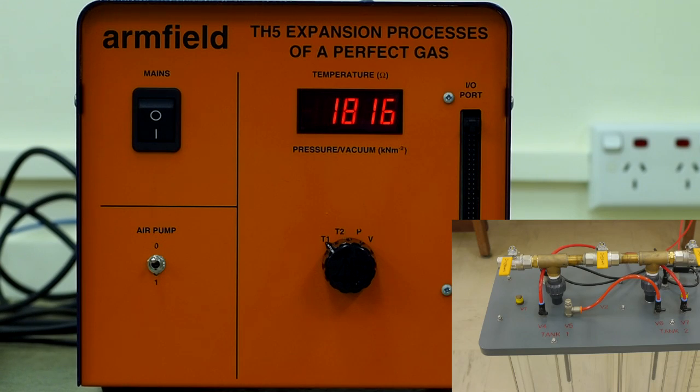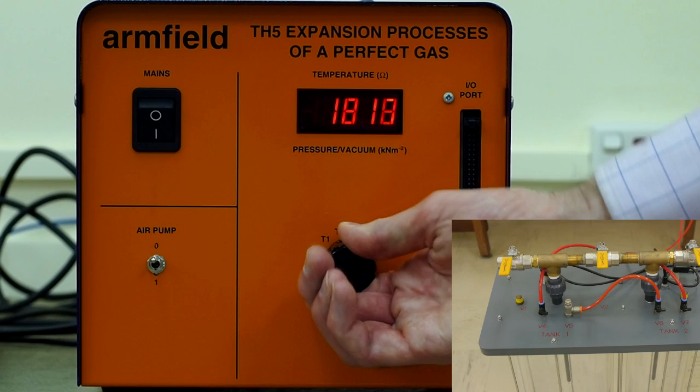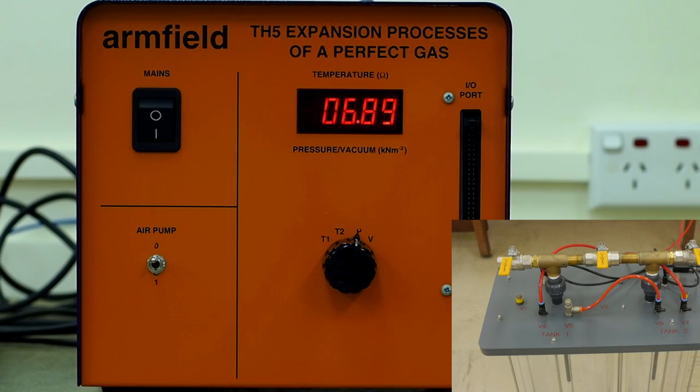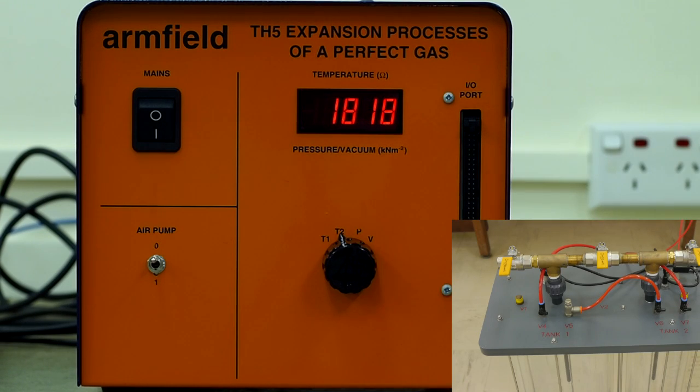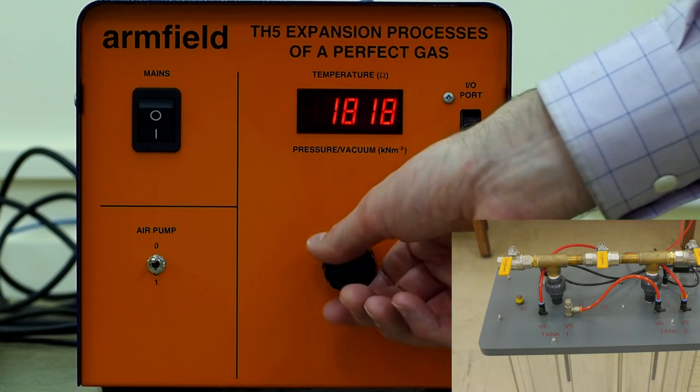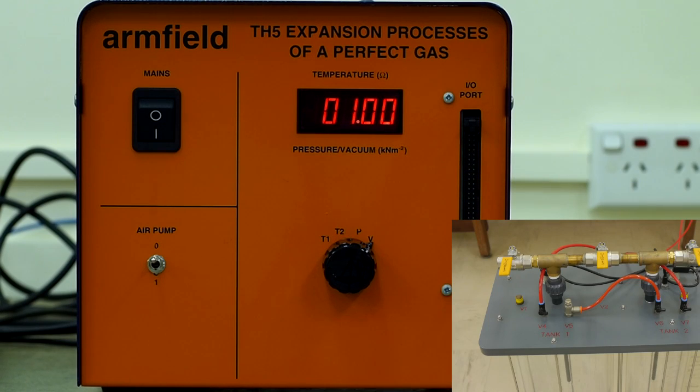Once the system is stable, use the display control knob to once again find the temperature and pressure for the large cylinder, and temperature and vacuum value for the small cylinder. These values represent the final state of the system, and must be recorded in your lab notes.